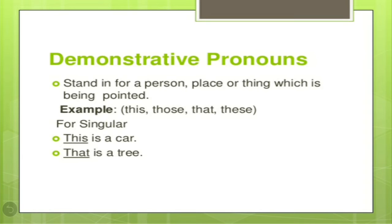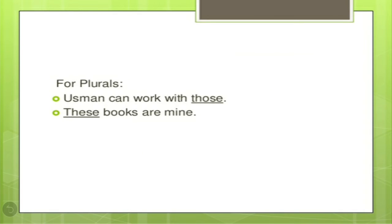Demonstrative pronouns stand in for a person, place or thing which is being pointed out. The examples are: this, those, that, these. For singulars there are different pronouns and for plurals there are different demonstrative pronouns. For example, 'This is a car' and 'That is a tree' — when talking about singular things, we use 'this' and 'that'. But when we talk about plurals, like 'Usman can work with those' or 'These books are mine', we use 'these' and 'those'.